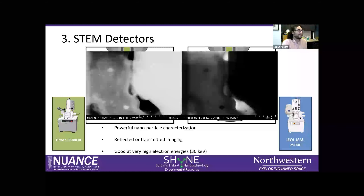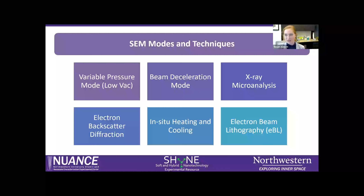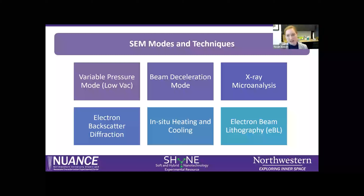Now Tirza will talk about SEM modes and different techniques. If you're using SEM, you'll probably start with imaging using one or all of those detectors, but some of our SEMs have advanced modes. We've done previous tech talks on these techniques, so I won't spend too much time here — QR codes will appear so you can scan them for more information. The six techniques we'll cover are: variable pressure or low vacuum mode, beam deceleration mode, X-ray microanalysis, electron backscatter diffraction (EBSD), in-situ heating and cooling, and electron beam lithography.